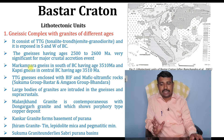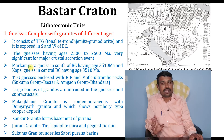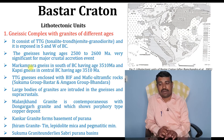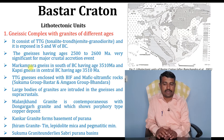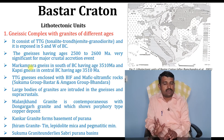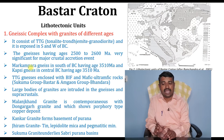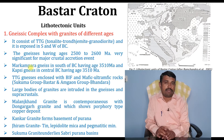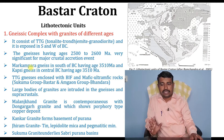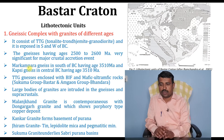The Markamkhi Gneiss in the south of the Bastar Craton has an age of 3510 million years. There is also the Channagiri Gneiss, present in the central Bastar Craton, also having an age of 3510 million years. The TTG gneiss is enclosed with BIF — banded iron formations — and mafic-ultramafic rocks belonging to the Sukma group and the Bandarag region. This BIF is very important for iron deposits in this craton.